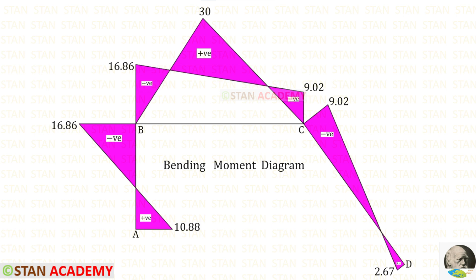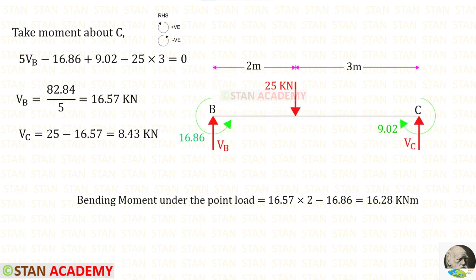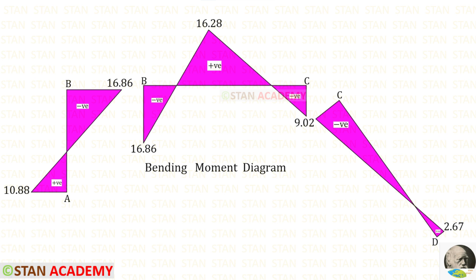You can see the bending moment diagram by superposition method. Using these final expressions, we can find H_A and R_D. Let us take the horizontal member BC and find the reactions. Taking moment about C gives V_B. To find V_C, we subtract V_B from 25. We can then find the bending moment under the point load. You can also see the shear force diagram. Alternatively, we can draw the bending moment diagram indicating the moments at all points. Thank you for watching this video.